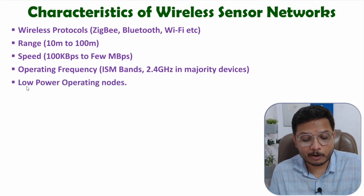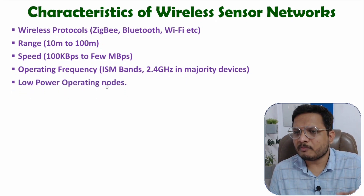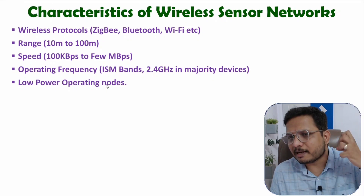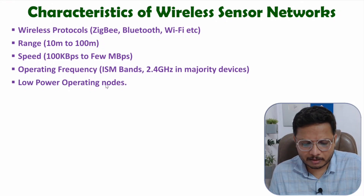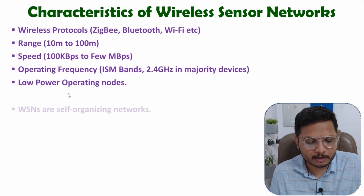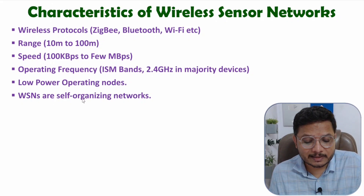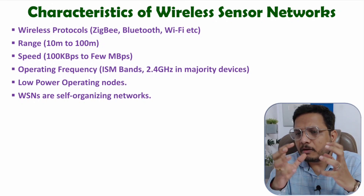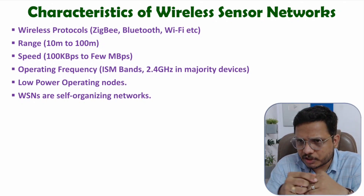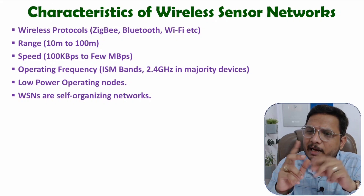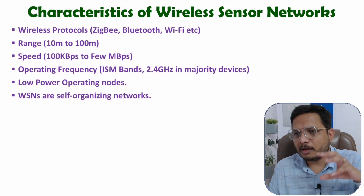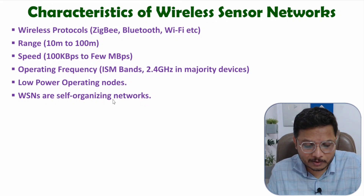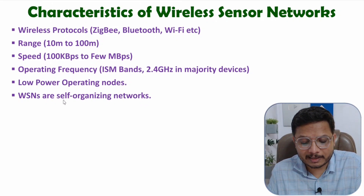All these end nodes are working at low power, so with the use of a battery also, those end nodes can be sensing the data. You don't need to worry about power consumption — it is working with low power operating nodes. WSN is a self-organizing network — self-organizing means you don't need to have manual configuration. All the end nodes will be directly communicating to the router, and the router will be transferring data to the gateway, and then the gateway will transfer that data to the internet — all those things happen as per protocols where it is self-organizing.